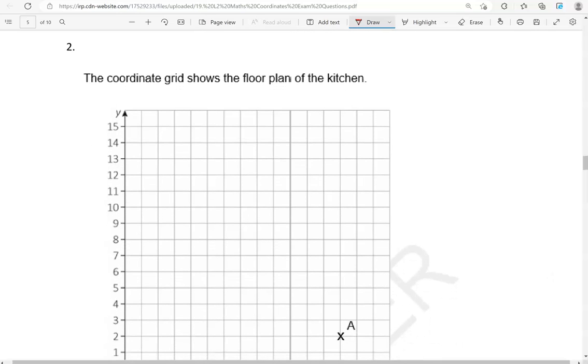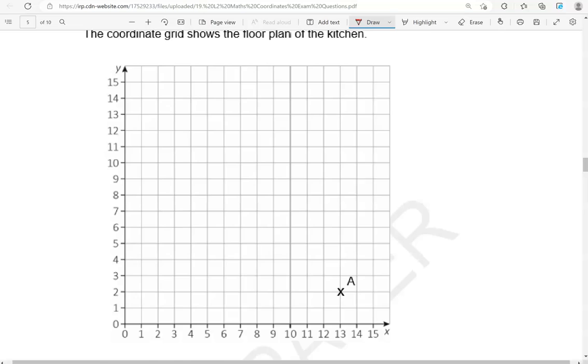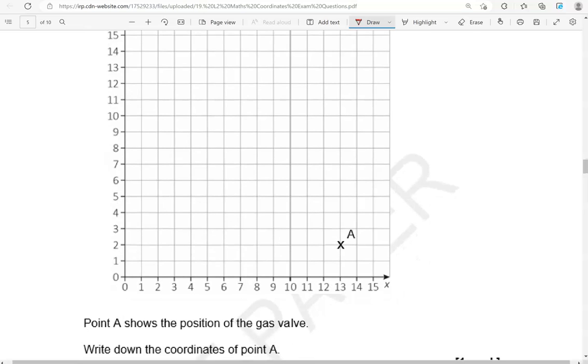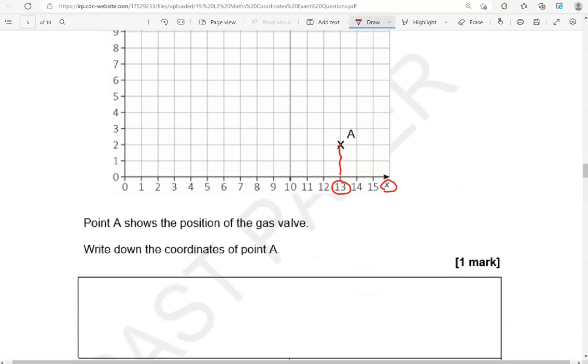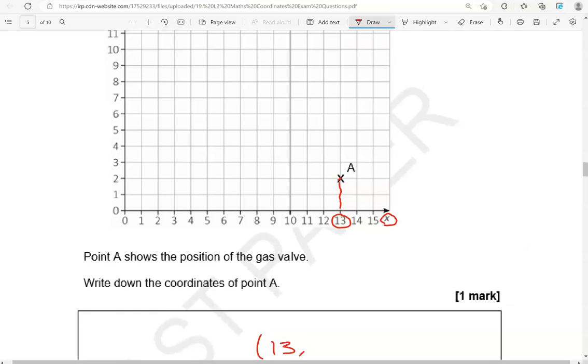The coordinate grid shows the floor plan of the kitchen. Point A shows the position of the gas valve. Write down the coordinates of point A. So, we'll start with the x-axis. There is the point. So, going down. That's 13, comma, 2.